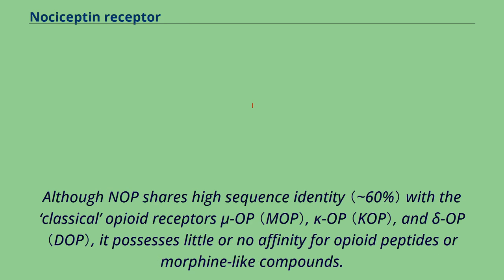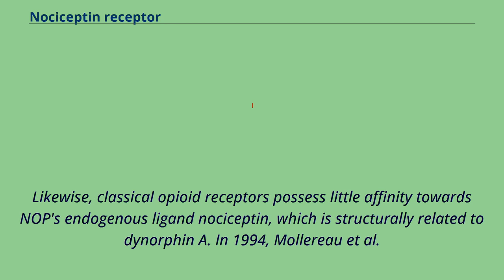Although NOP shares high sequence identity with the classical opioid receptors mu-OP, kappa-OP, and delta-OP, it possesses little or no affinity for opioid peptides or morphine-like compounds. Likewise, classical opioid receptors possess little affinity towards NOP's endogenous ligand nociceptin, which is structurally related to dynorphin A.